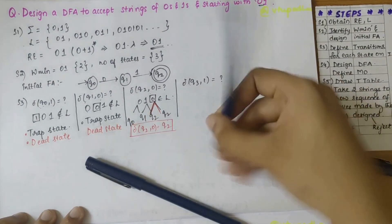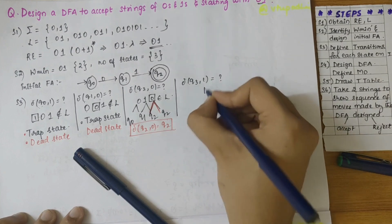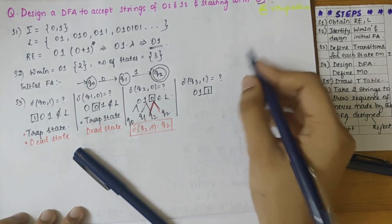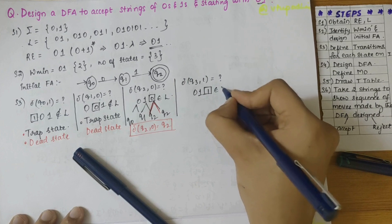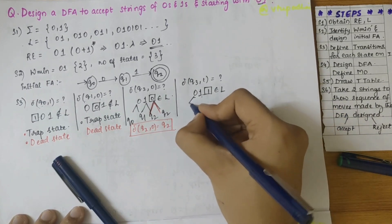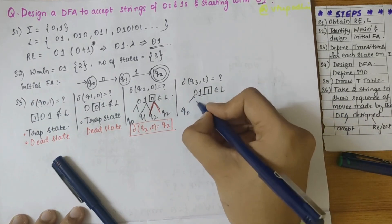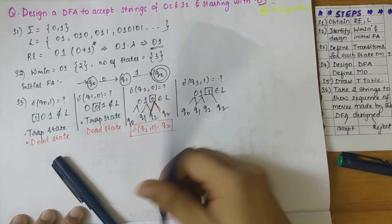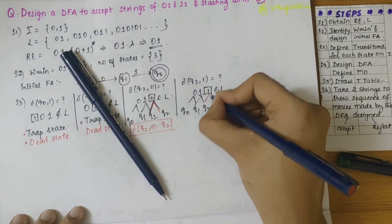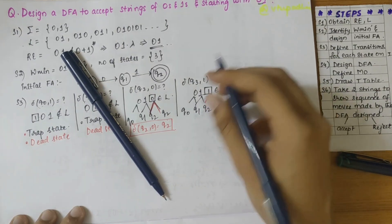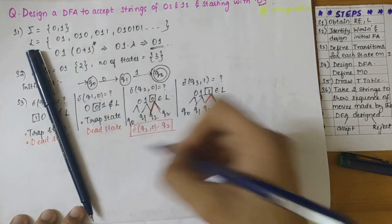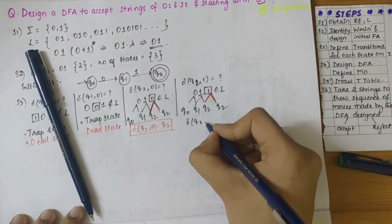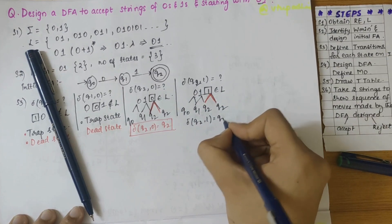Moving on to q2 on 1: before that we have zero and one — does this belong to the language set? Yes, because it's starting with zero-one. So q0 on 0 is q1, q1 on 1 is q2, and it has to end with q2. Thus the only possible transition is q2 on 1 should also give q2 itself.